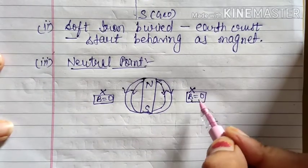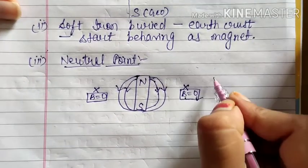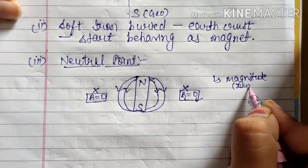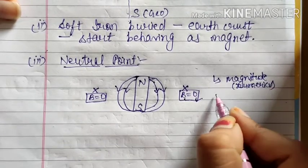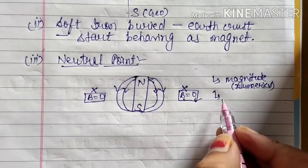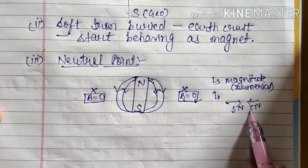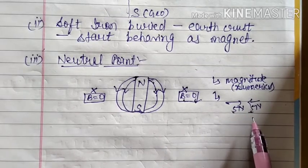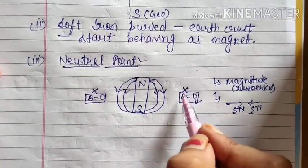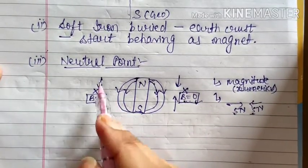If any vector quantity has its value zero, two possibilities exist. Either the magnitude of that quantity is zero, so the answer is automatically zero. Or the second possibility is that we have two equal and opposite values — as if you have one force of 5 Newton here and one force of 5 Newton in the opposite direction, the net force is zero. Similarly, at these two neutral points, two magnetic fields are present which are equal and opposite.